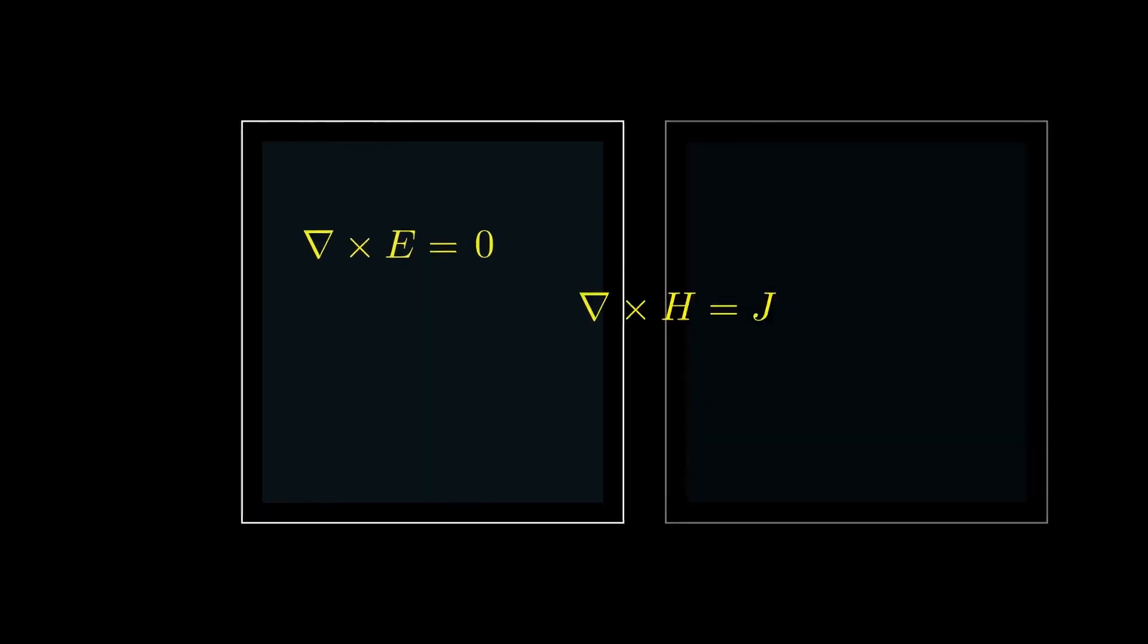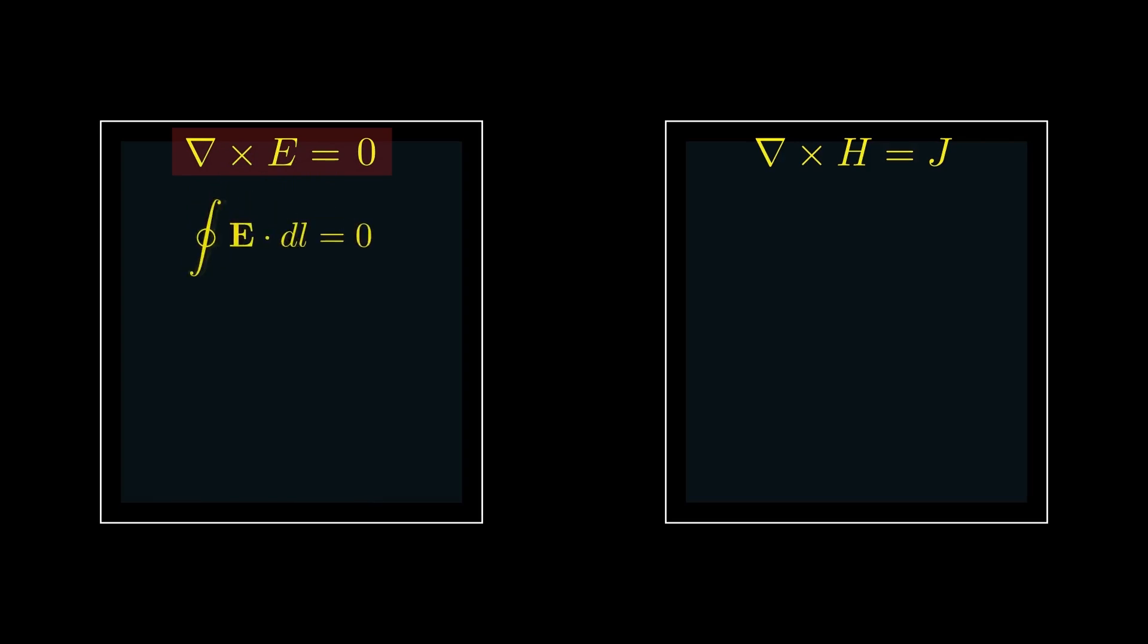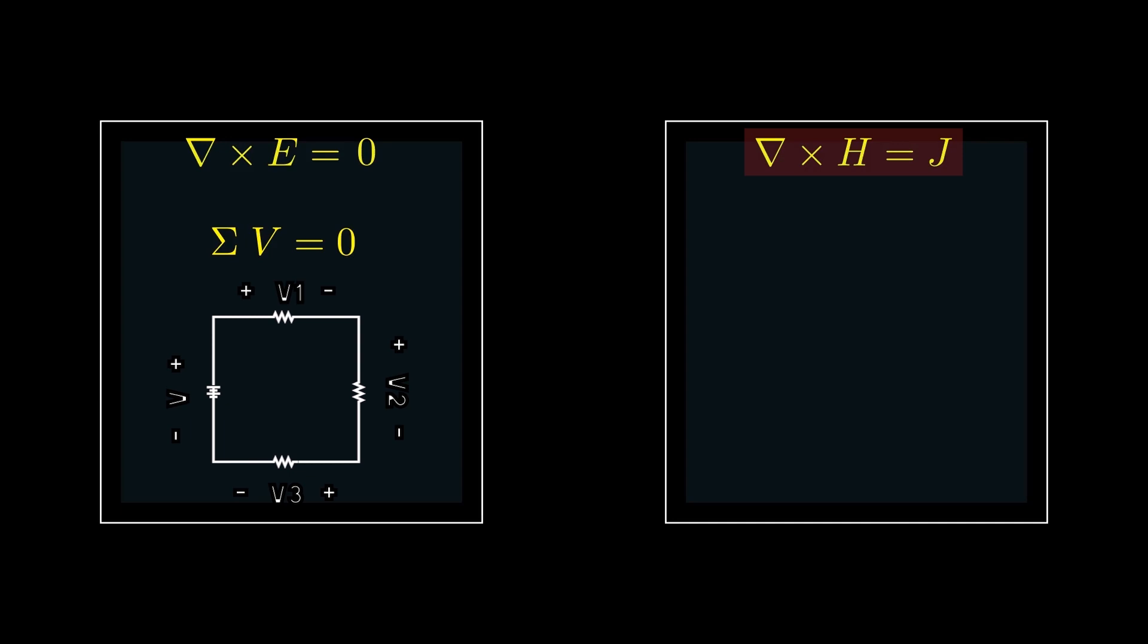In Faraday's law, if mu nought is set to zero, then the line integral of electric field or the voltage around any closed path is zero. This is exactly the Kirchhoff voltage law. And when epsilon nought is equal to zero in Ampere-Maxwell equation, the curl of the magnetic field depends only on the conduction current density j. Taking the divergence of both sides while keeping in mind that the divergence of curl is always equal to zero, we get the Kirchhoff current law. The divergence of current density at any node is always equal to zero, meaning that the current entering a node must be equal to the current flowing out of it.